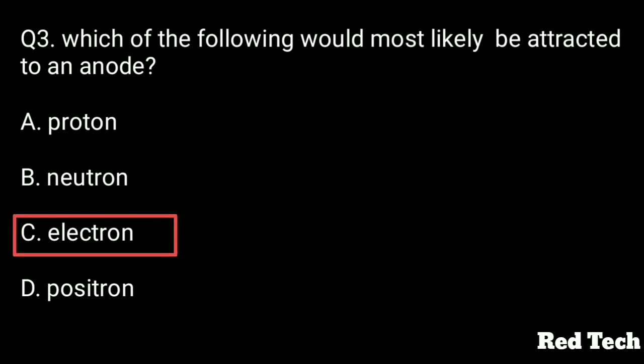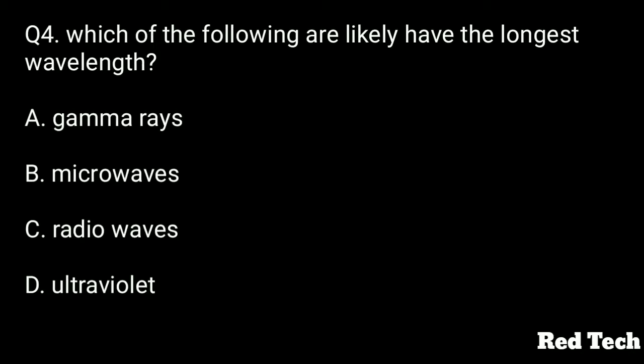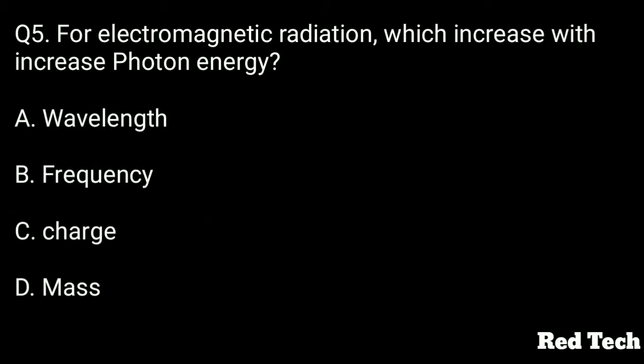Question number four: Which of the following is likely to have the longest wavelength? Options are: gamma rays, microwaves, radio waves, or ultraviolet. The right answer is option C, radio waves.